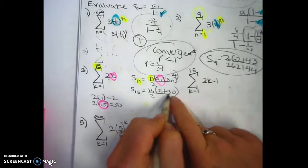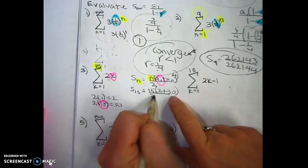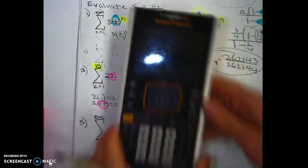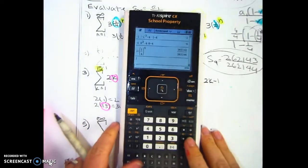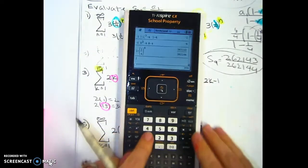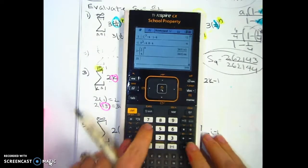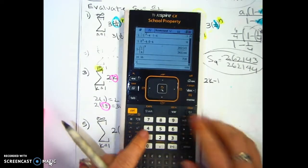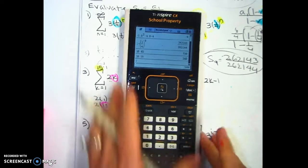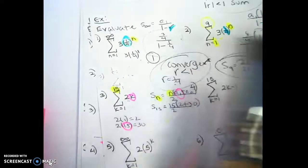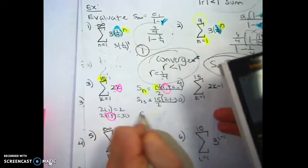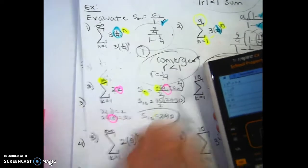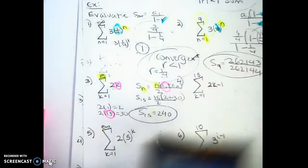So 2 plus 30 is 32, divided by 2 is 16. Then 16 times 15, which I'll calculate — and I get 240. So the sum of the first 15 terms is 240.